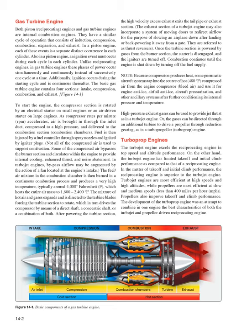In turbojet engines, bypass airflow may be augmented by the action of a fan located at the engine's intake. The fuel/air mixture in the combustion chamber is burned in a continuous combustion process, producing a very high temperature — typically around 4,000 degrees Fahrenheit — which heats the entire air mass to 1,600 to 2,400 degrees Fahrenheit. The mixture of hot air and gases expands and is directed to the turbine blades, forcing the turbine section to rotate, which in turn drives the compressor by means of a direct shaft, a concentric shaft, or a combination of both.